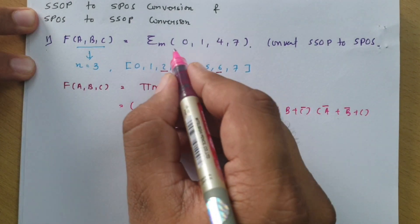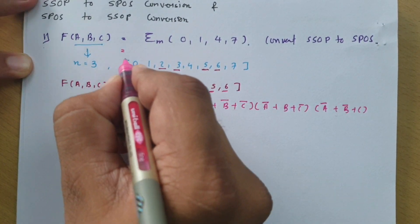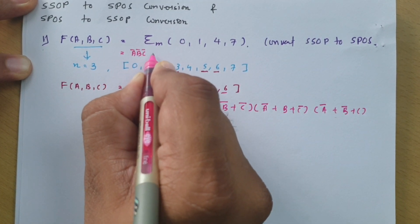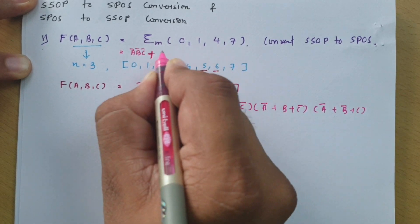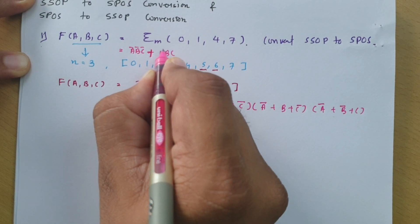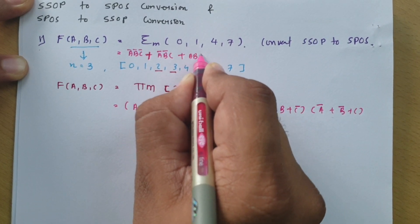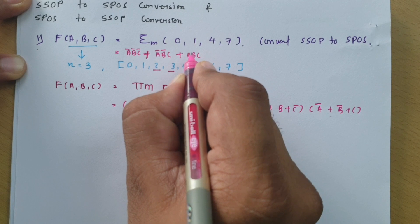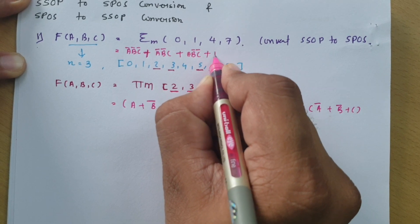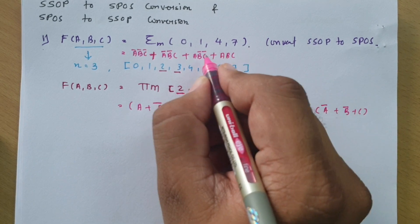If you want to write these minterms in variable form: 0 means all bits are 0, so write a, b, c — all bars — giving a bar b bar c bar. Plus for 1: 0,0,1 gives a bar b bar c. For 4: 1,0,0 gives a b bar c bar. For 7: 1,1,1 gives a b c. That is how to write the minterm variable expressions.